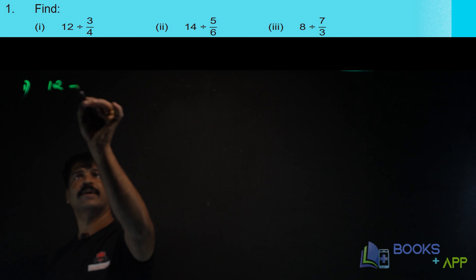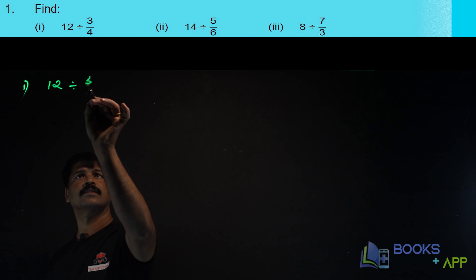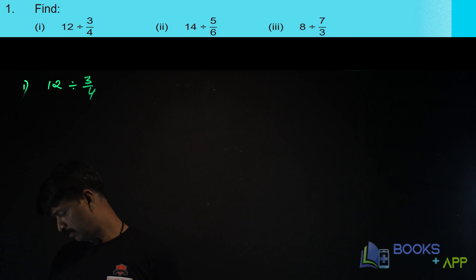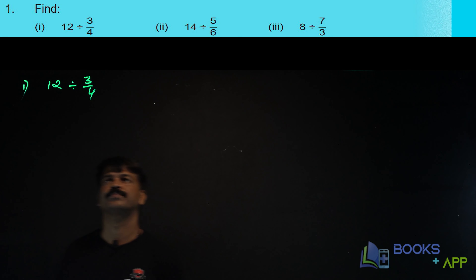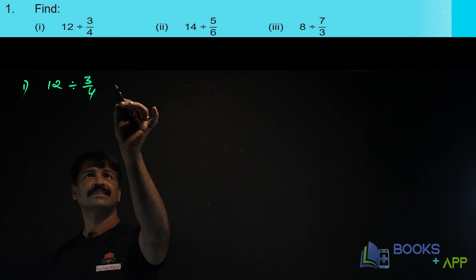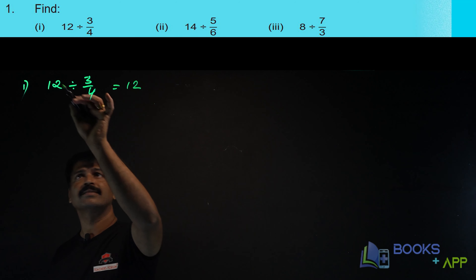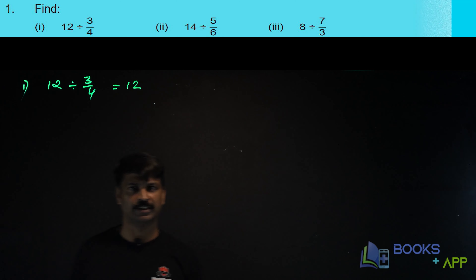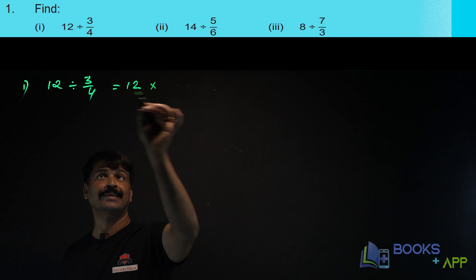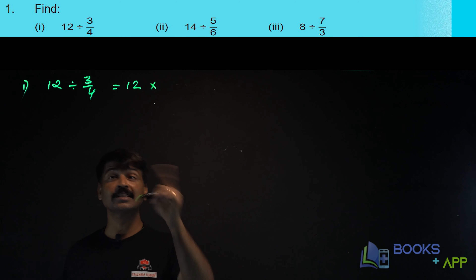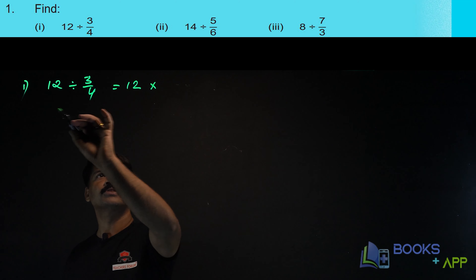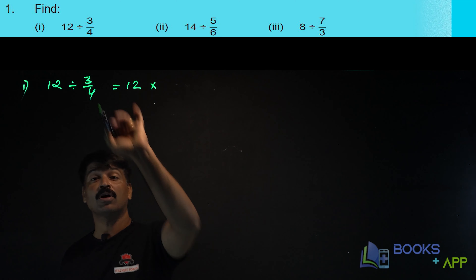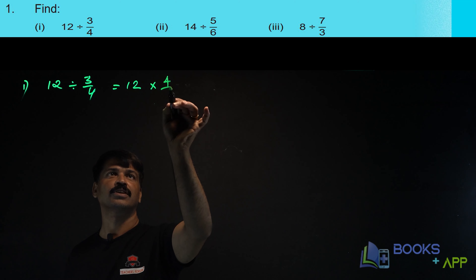Find 12 divided by 3 by 4. We have learnt that when you divide a whole number by a fraction, you multiply by taking the reciprocal of 3 by 4. So it becomes 12 into the reciprocal of 3 by 4, that is 4 by 3.